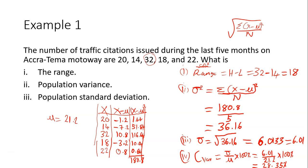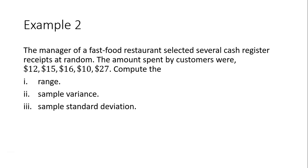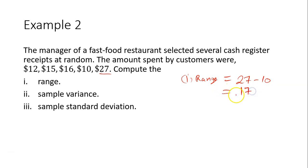Let's go to example two. Four values are $12, $15, $16, $10, and $27. Compute the range, the sample variance, and the sample standard deviation. For part one, the range equals the highest value 27 minus the lowest value 10, which gives 17.